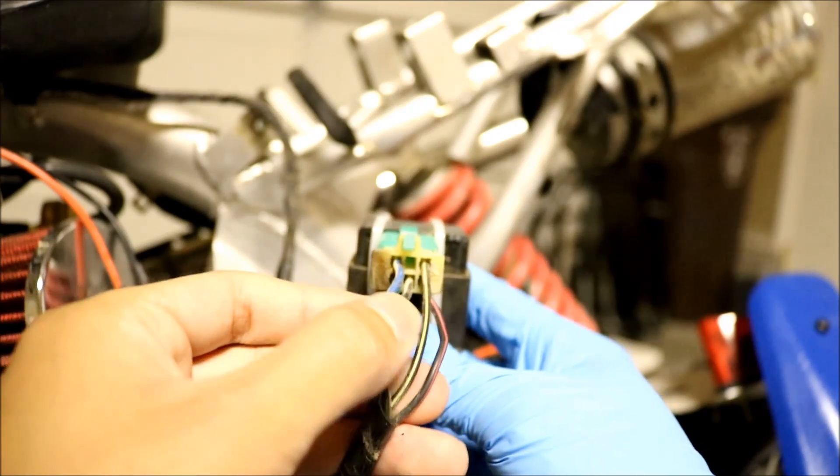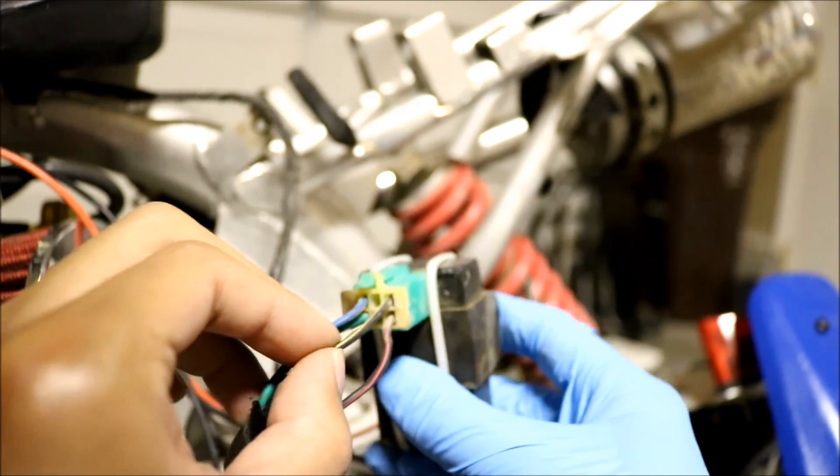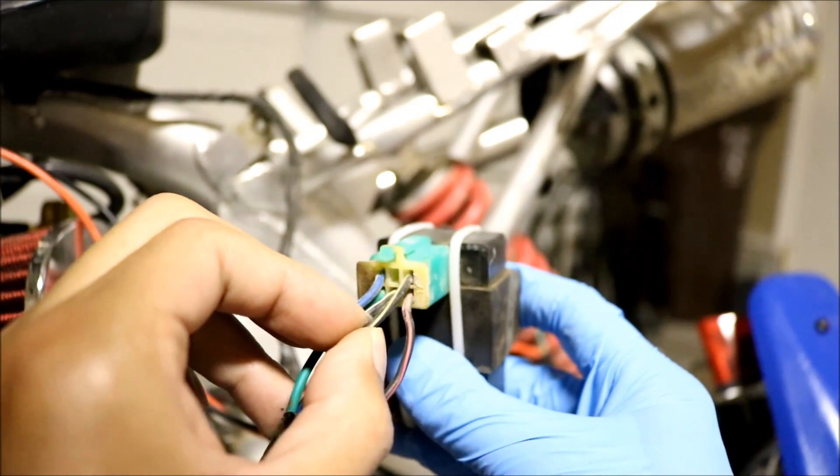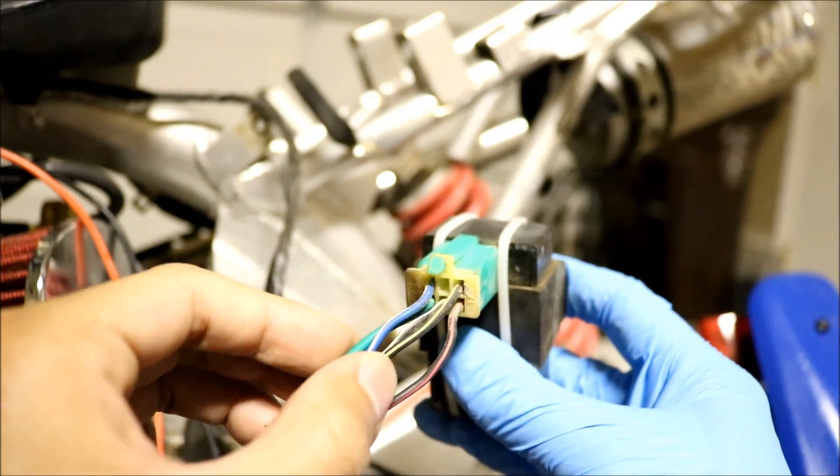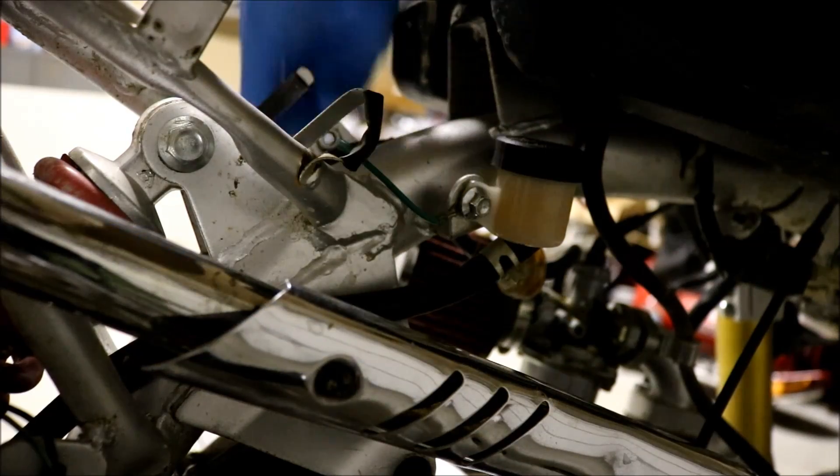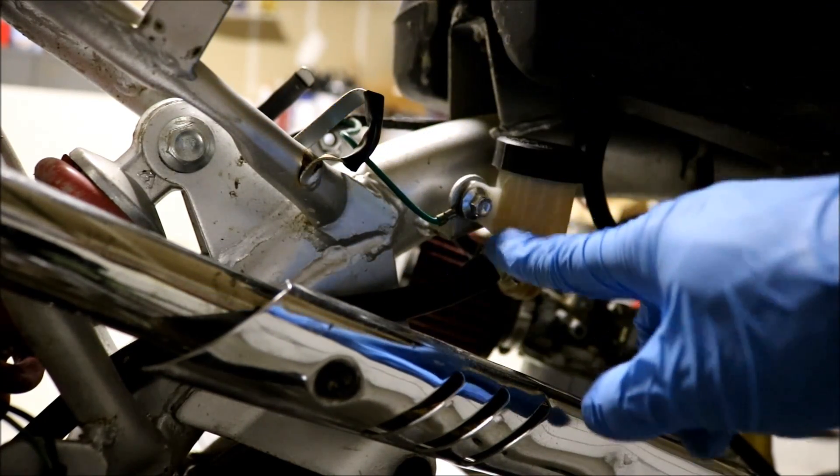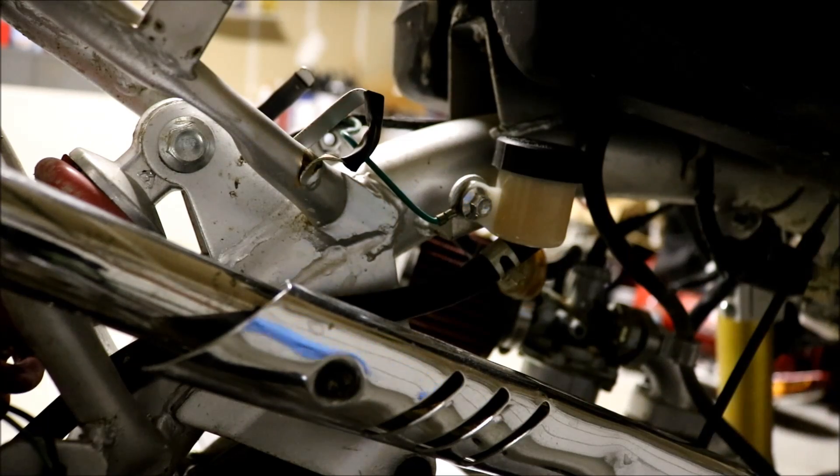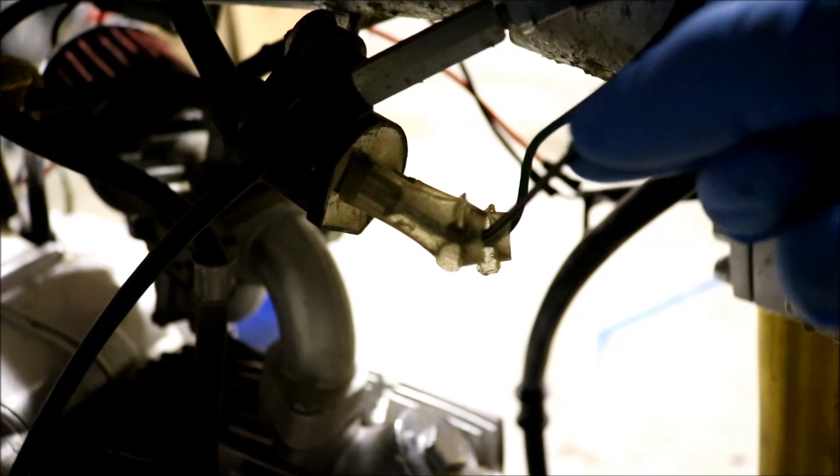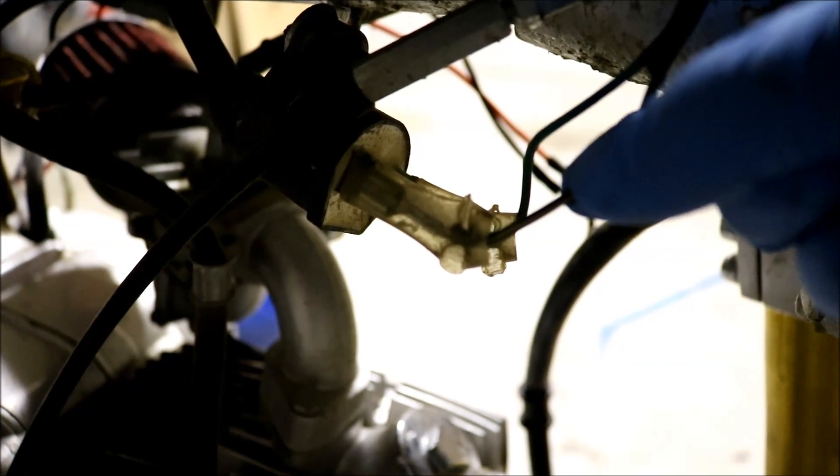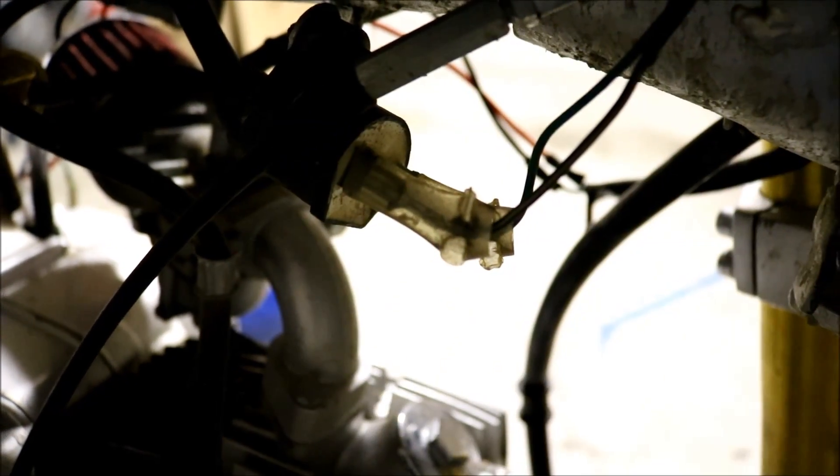So those are connected there and for the coil pack for the ignition, runs the black and yellow right here and the ground. Those go to the ignition. Also coming from the CDI, the ground, it's spliced and grounded to the frame. And like I said, running from your CDI to your ignition coil is the black and yellow and the ground. And then the ignition coil runs into the spark plug.